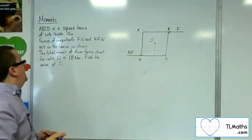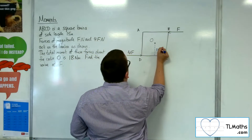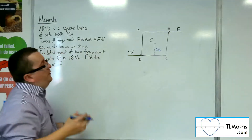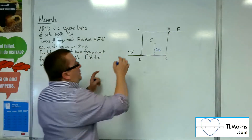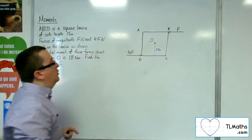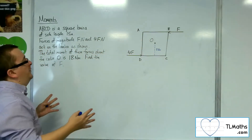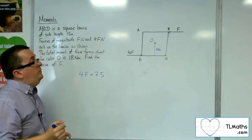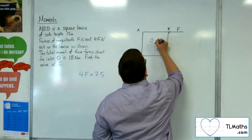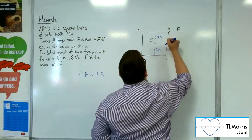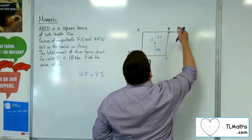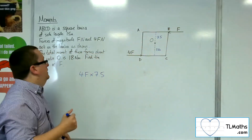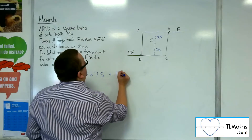This is a square of side length 15 metres, so this distance here will be 7.5 metres. The moment about O from that force will be 4F lots of 7.5. And because you're going around that way, you've got an anti-clockwise direction, so it will be positive. So we've got 4F times 7.5. Then the perpendicular distance for the other force will also be 7.5, in order to make the full 15. That's F, and that will be pushing around in an anti-clockwise direction as well, so that will also be positive. So, F times 7.5.